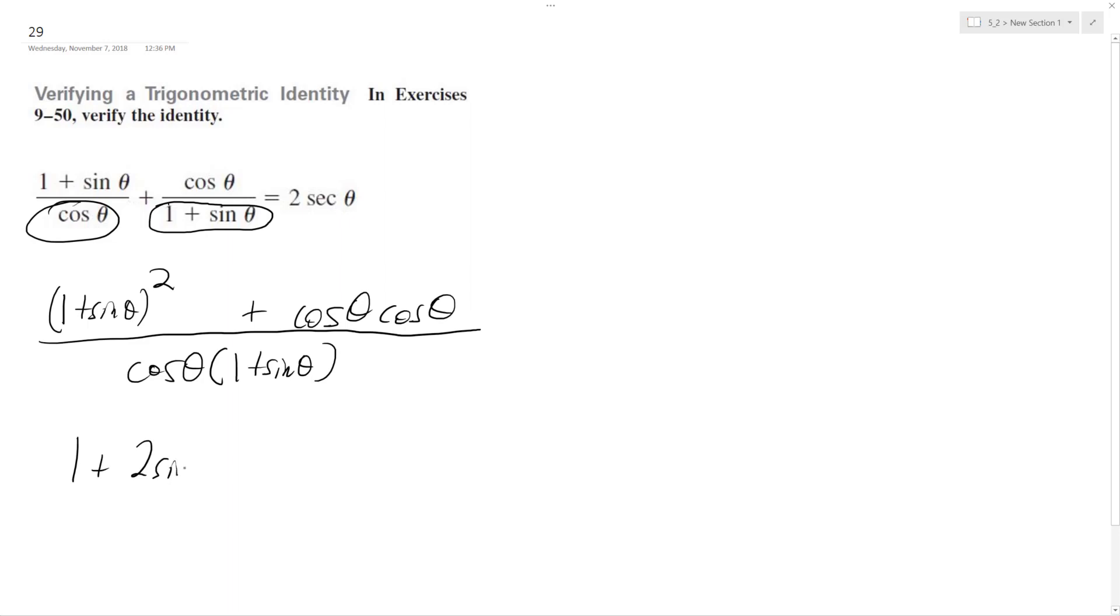We get 1 plus 2 sine theta plus sine squared theta plus cosine squared theta in the numerator. Since sine squared theta plus cosine squared theta equals 1, this simplifies.